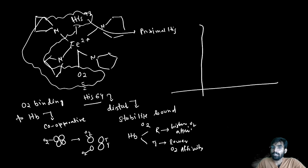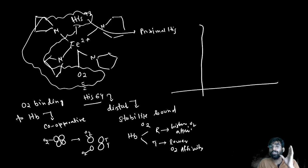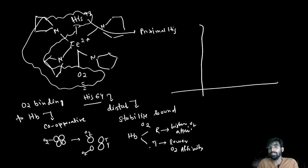The main purpose of hemoglobin's two states is that partial pressure of oxygen differs in different parts of the body. You must take oxygen from outside where partial pressure is higher, and release it inside the body where partial pressure is lower. In the relaxed (R) state, oxygen binds to hemoglobin; in the tight (T) state, oxygen is released.